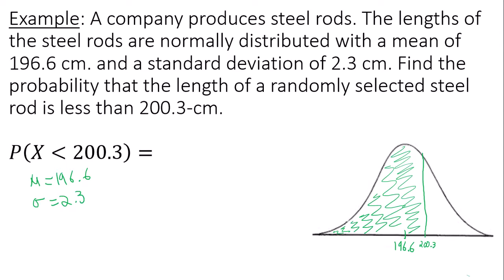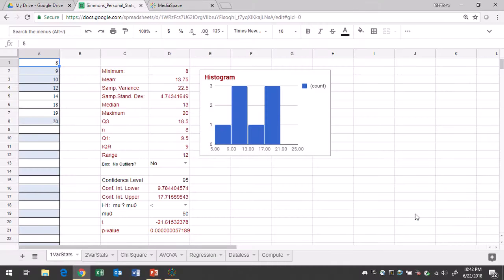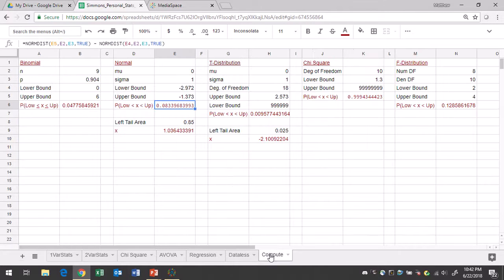So what we're going to do is use Google Sheets. In Google Sheets, you will go to the compute tab, go to the normal area, and you will type in your mean. In this case it's 196.6 and your standard deviation is 2.3.